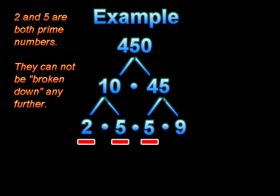Now at this point, we have broken 450 down into four numbers. Notice at the bottom we have 2 times 5 times 5 times 9, and three of those four numbers are prime numbers. Remember, a prime number is a number that can only be produced by multiplying one times itself to make that number. 9 is still a composite number, therefore we can break it down even further.